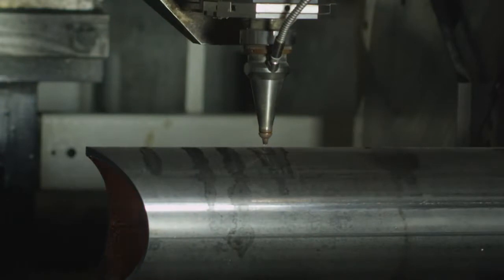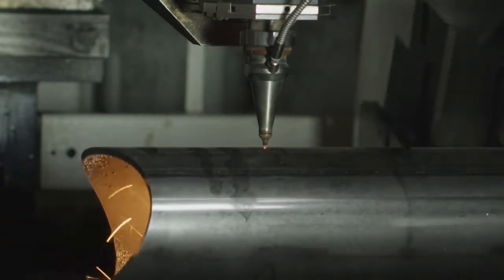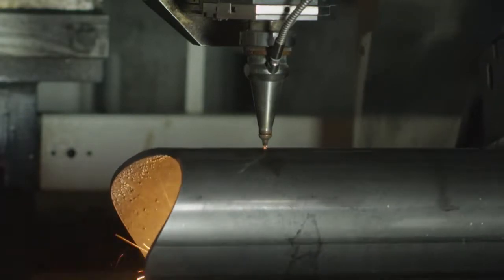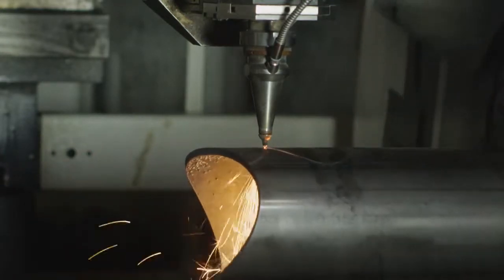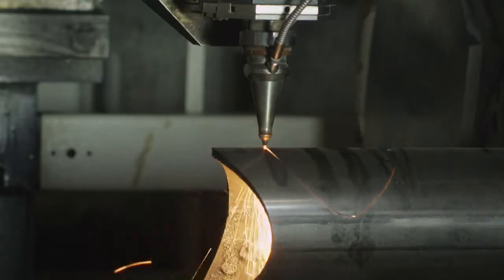As seen here, the tubing is being cut quickly and efficiently using the normal to surface cutting process because the head of the laser is positioned at a 90 degree angle from the wall of the round tubing.